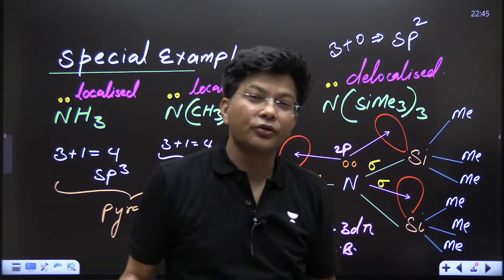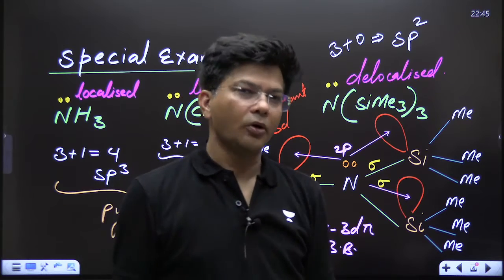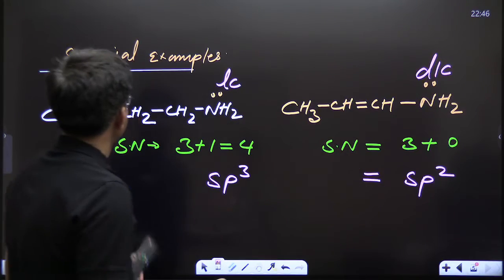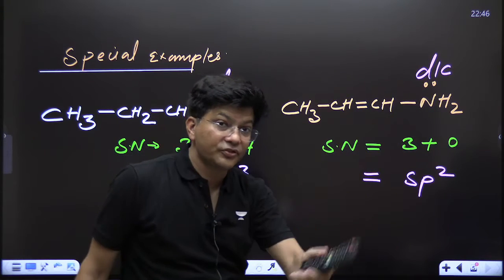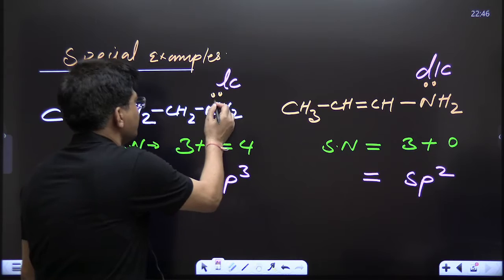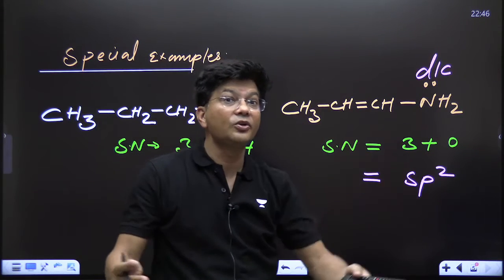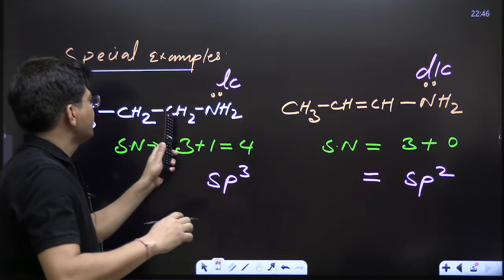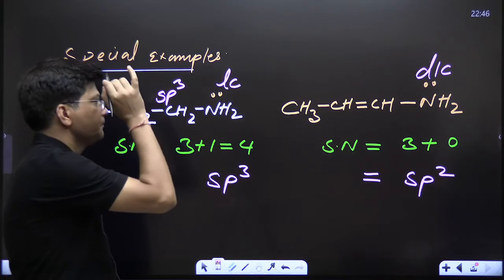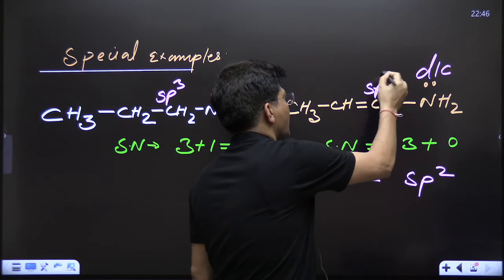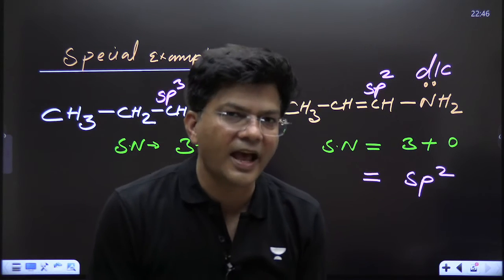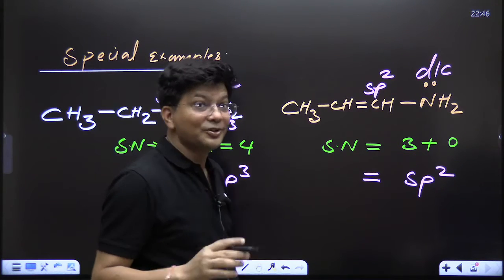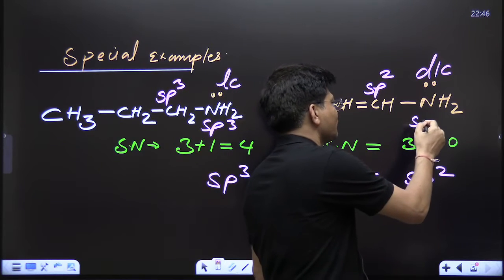This lone pair moving — these things are going to give you many answers once you have good command on hybridization. Now one more awesome example: see these two nitrogen atoms — there is a big difference. This nitrogen's lone pair is localized, but that nitrogen's lone pair is delocalized. How do you know? Look at the adjacent carbon. Adjacent to this nitrogen, the carbon is sp³ hybridized; adjacent to that nitrogen, the carbon is sp² hybridized. Awesome trick: if the adjacent atom is sp³, nitrogen will be sp³; if adjacent atom is sp², nitrogen will be sp².